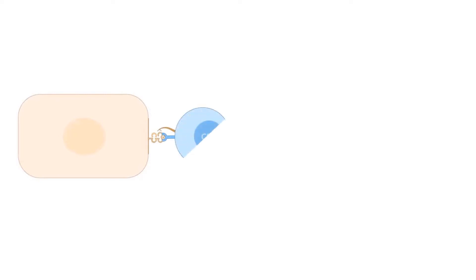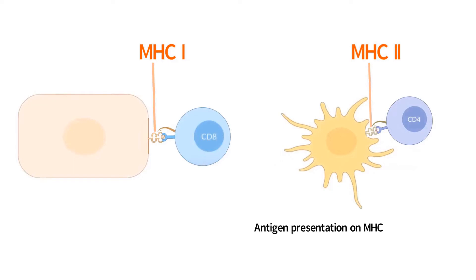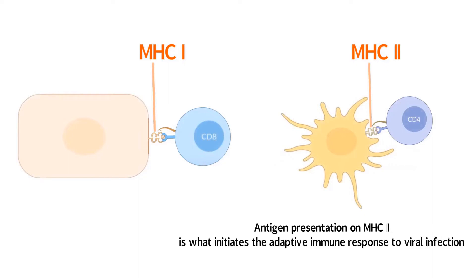MHC-2 is able to present antigen just as MHC-1 is. However, there is a very different response from the immune system when antigen is presented on MHC-1 than MHC-2. MHC-2 alerts the immune system to an infection, and antigen presentation on MHC-2 is what initiates the adaptive immune response to viral infection.